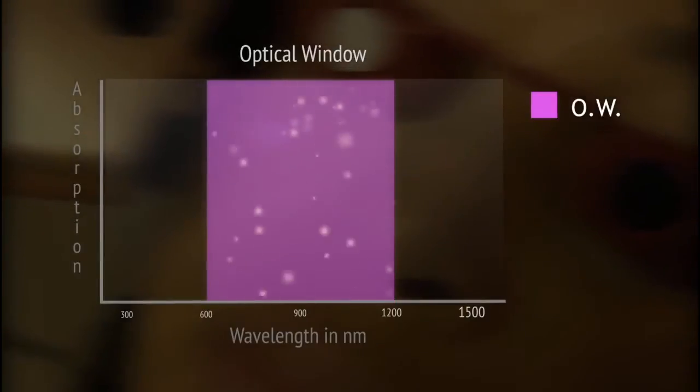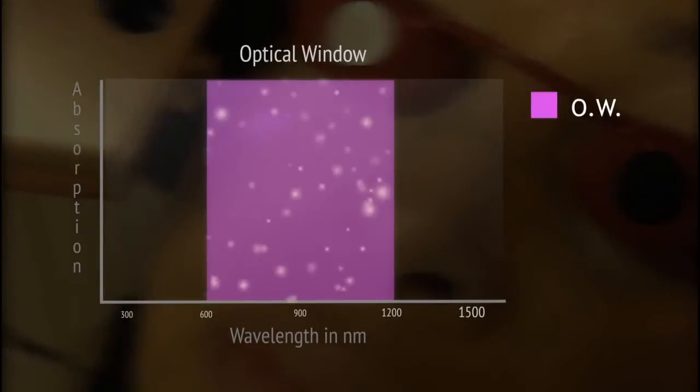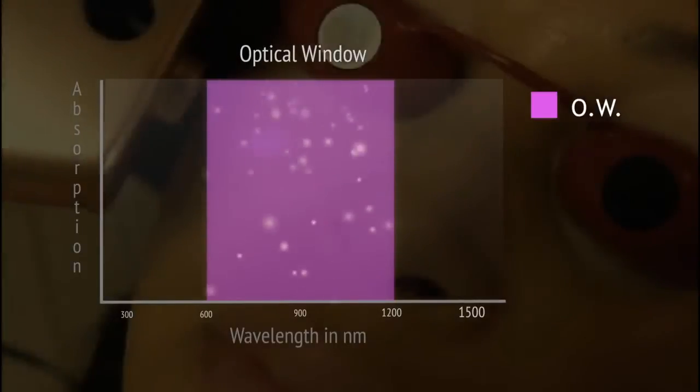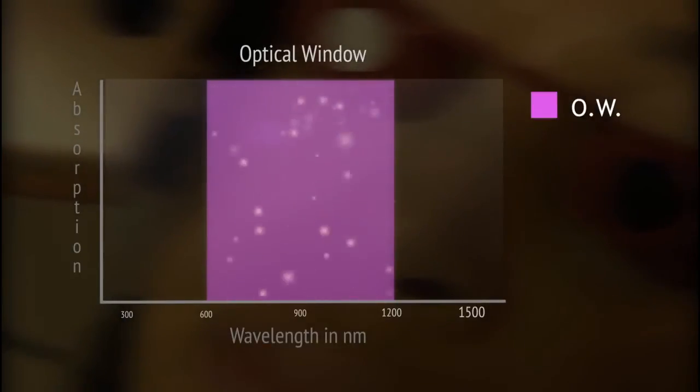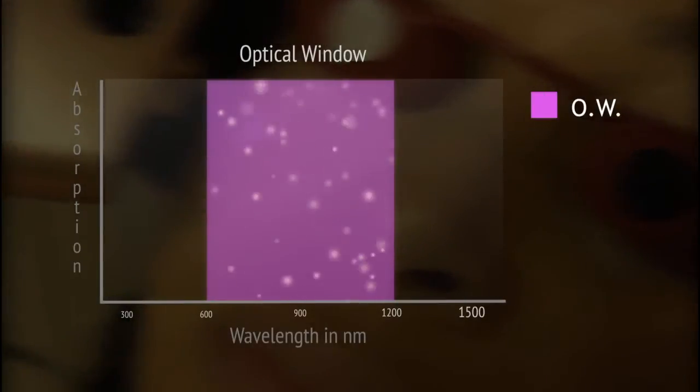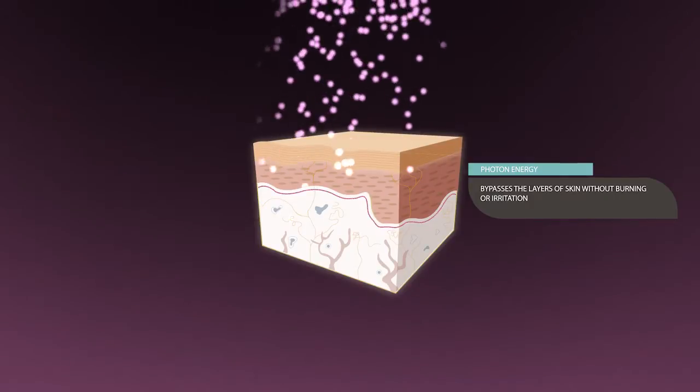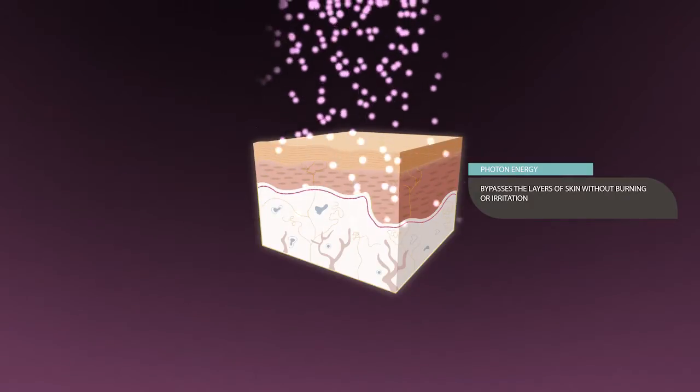To the left-hand side of where 600 is, things are blocked off. To the right-hand side of where the 1200, things are blocked off. But in between 600 and 1200, when you have a wavelength at those levels, the photons of energy are able to bypass the upper layers of skin without burning them and gently go down to the skin membrane where the receptor sites are located.